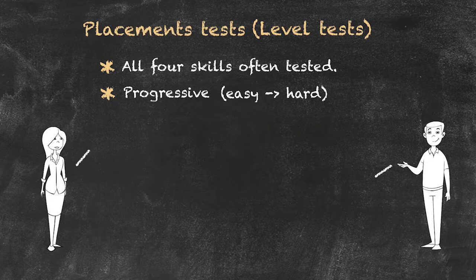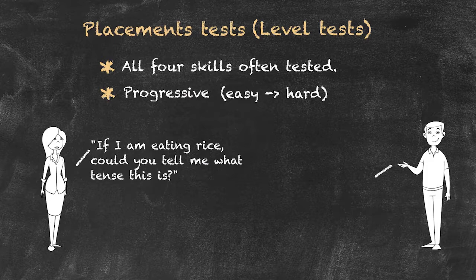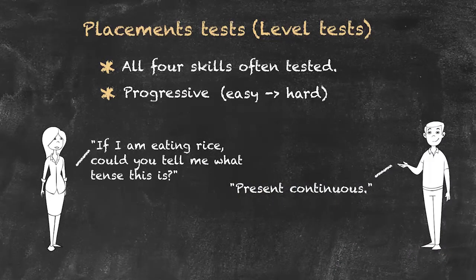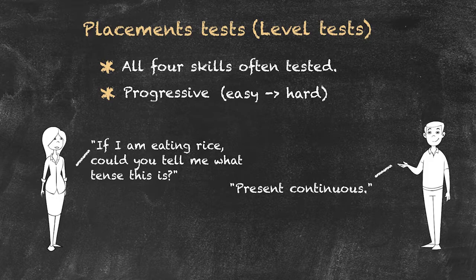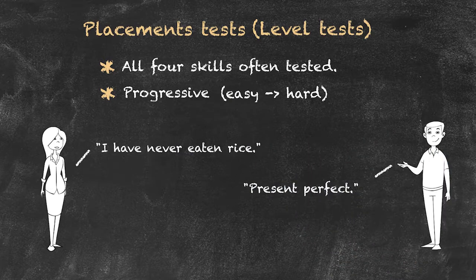We could say something like: if 'I am eating rice' — could you tell me what tense this is? If they are able to identify that tense as the present continuous, then can they actually identify each of the parts of speech within that question? If so, we could then give them another sentence of a different tense — for example, present perfect — and see if they can indicate the parts of speech for that one, looking particularly at the adverb of frequency.